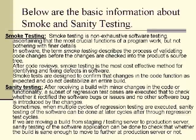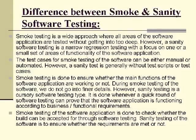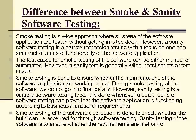The difference between smoke and sanity testing: smoke testing is a wide approach where all areas of the software application are tested without going into detail. However, sanity testing is a narrow regression testing focused on one or a small set of areas of functionality. Test cases for smoke testing can be either manual or automated, whereas sanity testing is generally done without test scripts or test cases.